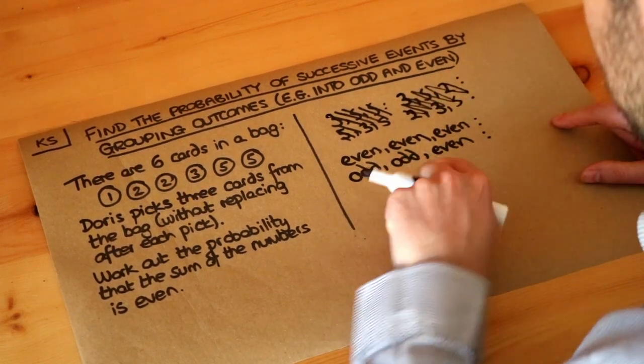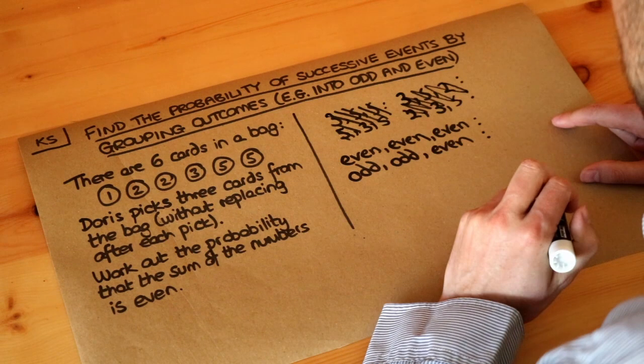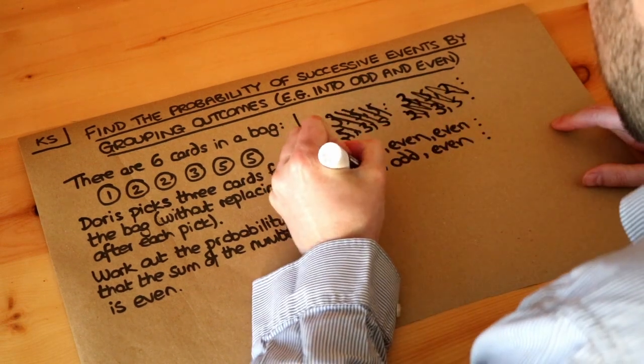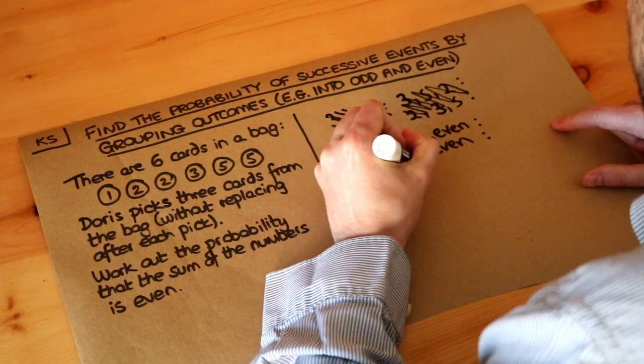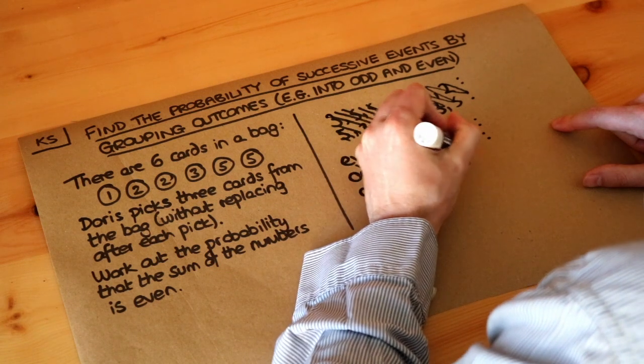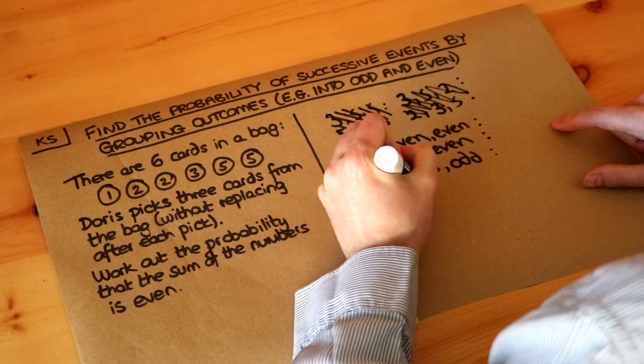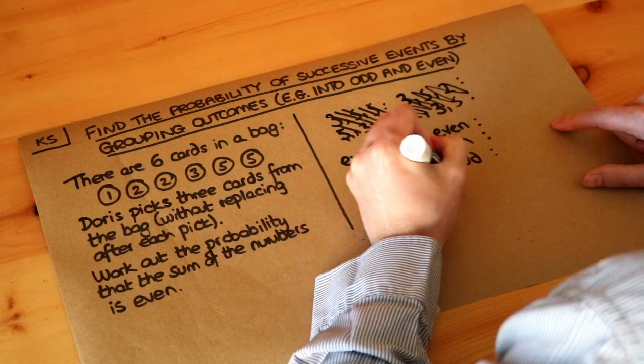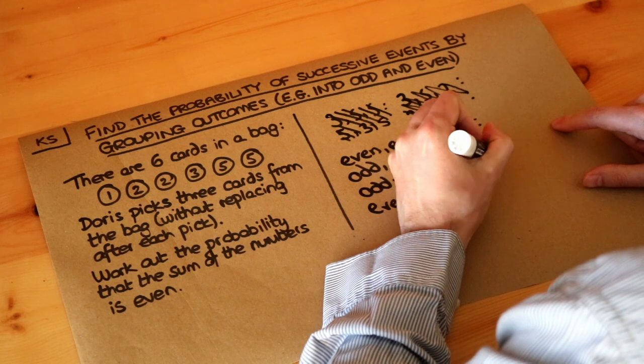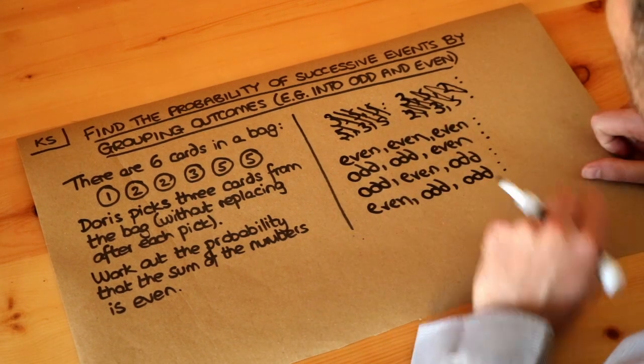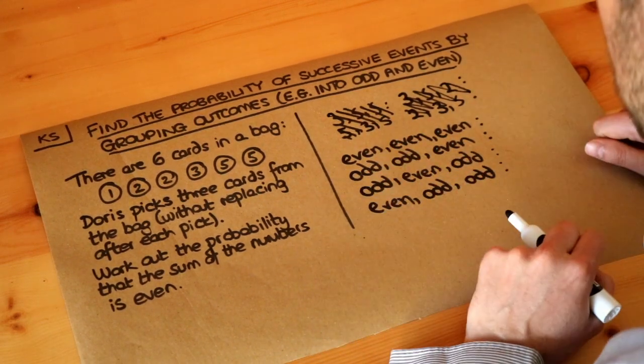And then there's also the different orderings of that, because the order in which we pick the cards does matter. So we could also have had odd, even, odd. And finally, we could have also have even, odd, odd. And that's all the ways in which we could have got a sum of an even number. It's these four different ways.